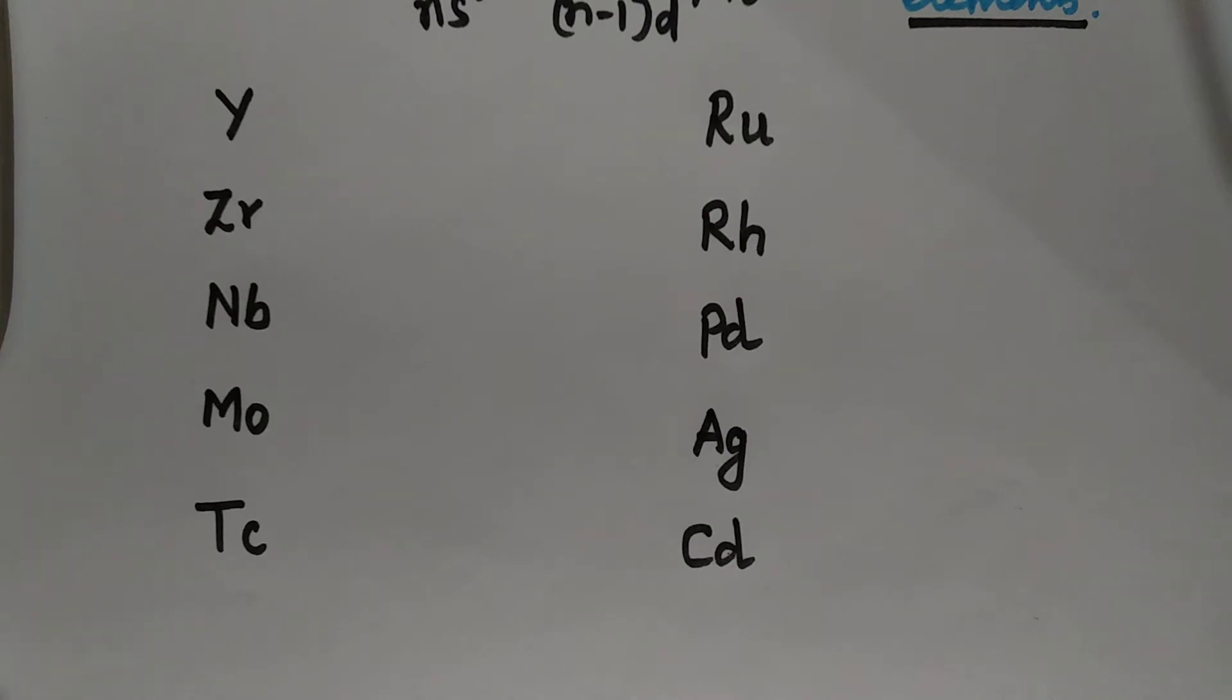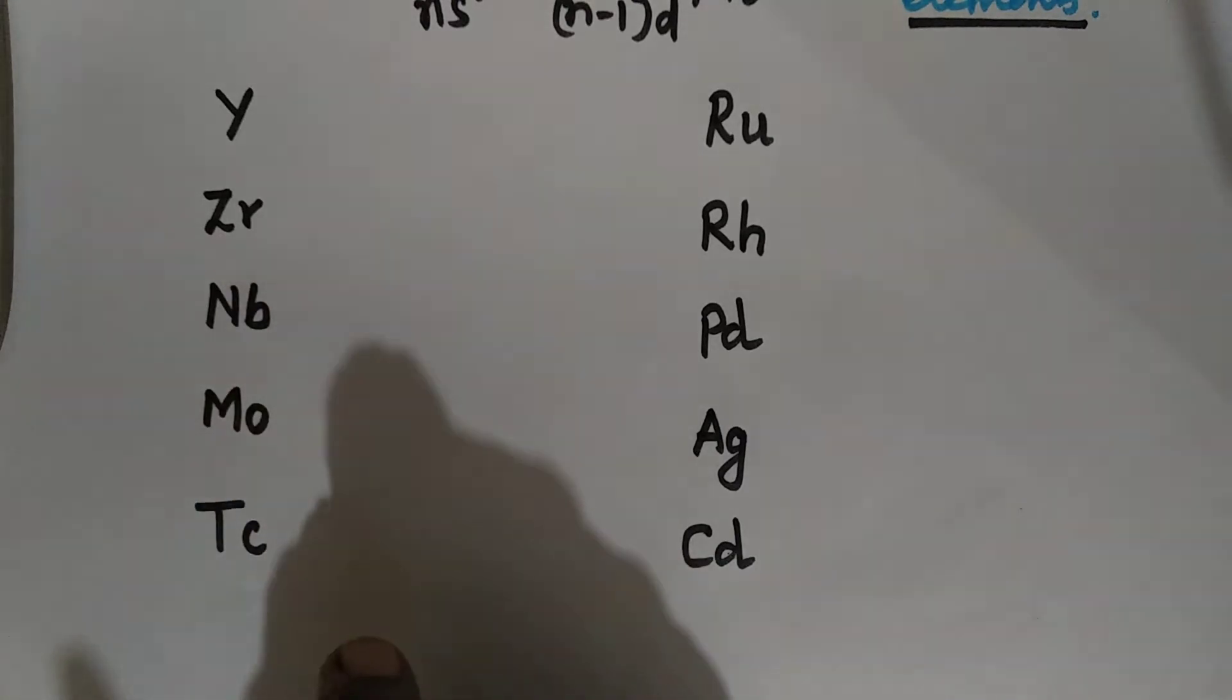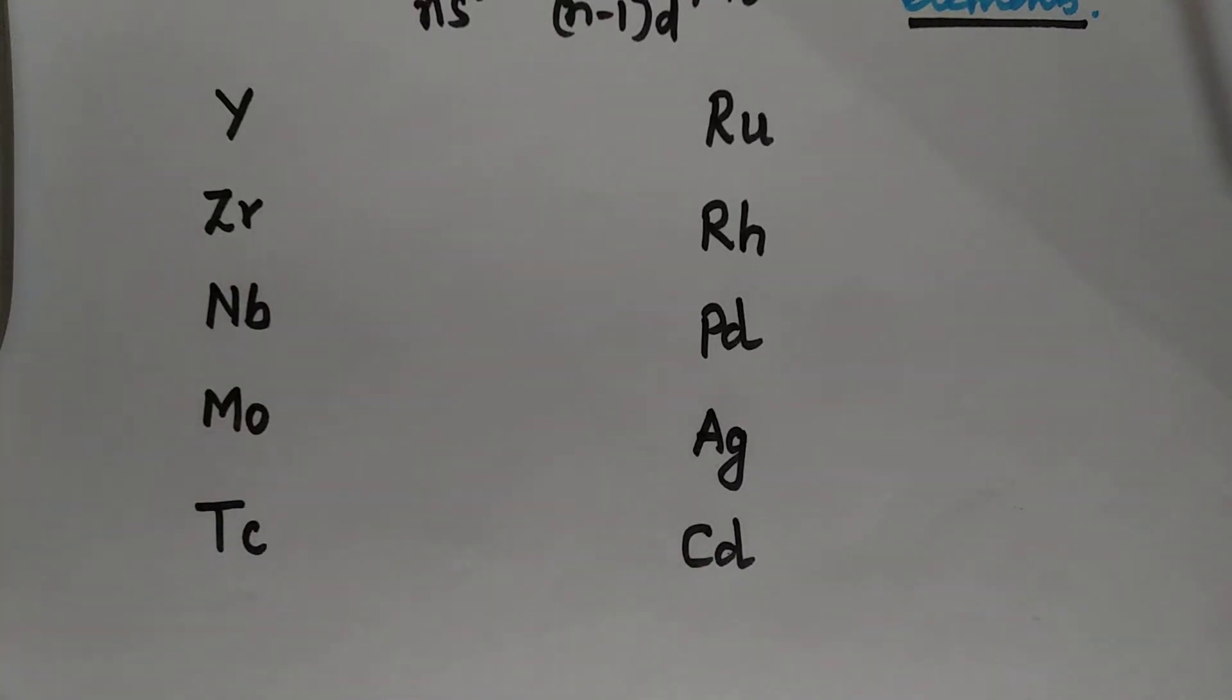Now we will write down its electronic configuration. We know as we have learned for our 3D block, the nearest noble gas configuration for these elements goes with krypton, because argon after is krypton only. We know that the names of the elements in the 18th group: helium, neon, argon, krypton, xenon, radon. So krypton will go for this 4D block elements. Because the 5S starts from strontium, and strontium next goes with yttrium.